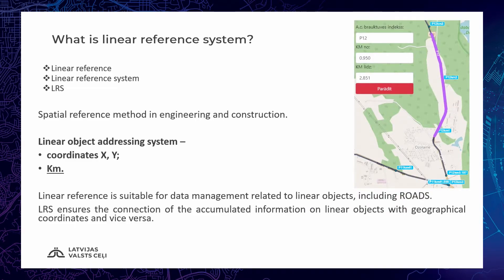Let's continue with definitions and theory. What is a linear reference system? Linear referencing, also called a linear reference system, is a method of spatial referencing in engineering and construction, in which the locations of physical features along a linear element are described in terms of measurements from a fixed point, such as a milestone along the road. Each feature is located by either a point or a line. If a segment of the linear element or route is changed, only those locations on the changed segment need to be updated. Linear referencing is suitable for management of data related to linear features like roads, railways, oil and gas transmission pipelines, power and data transmission lines, and other linear objects.